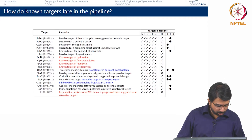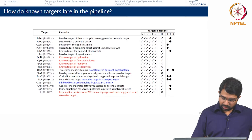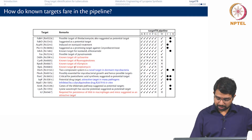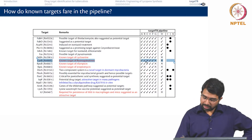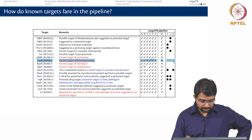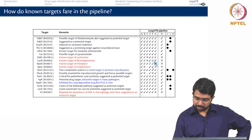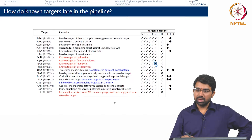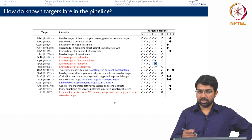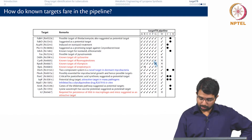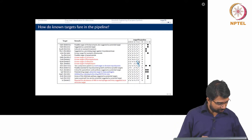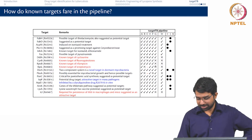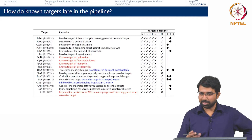Looking at known targets first — targets of cycloserine, fluoroquinolones, rifampicin, and streptomycin — many of them fail filter C, the structural similarity filter, and therefore do not figure in our high confidence list. Rifampicin is very similar to gut flora proteins, so patients taking rifampicin might experience adverse drug reactions from the drug interacting with gut flora proteins. Streptomycin has high sequence similarity to human proteins and also similarity to gut flora — which explains why it is a broad-spectrum antibiotic and is inimical to gut flora as well.